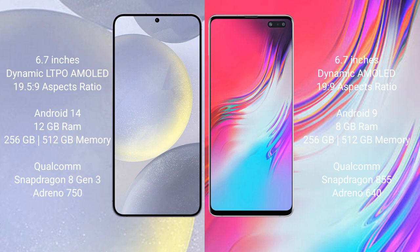Samsung Galaxy S24 Plus comes with 12GB RAM and 256GB internal storage, Qualcomm Snapdragon 8 Gen 3 processor and GPU Adreno 750. Samsung Galaxy S10 comes with 8GB RAM and 256GB internal storage, Qualcomm Snapdragon 855 processor and GPU Adreno 640.